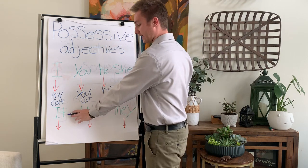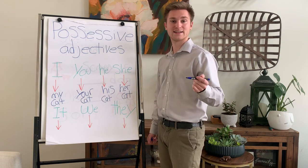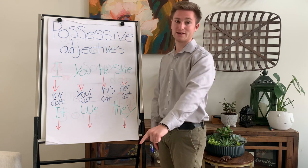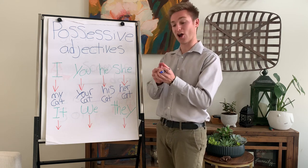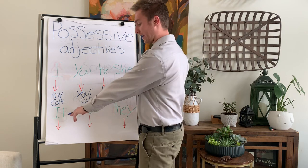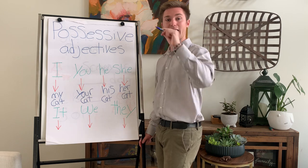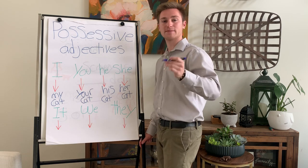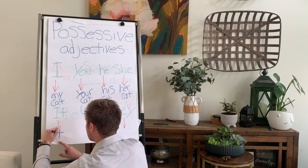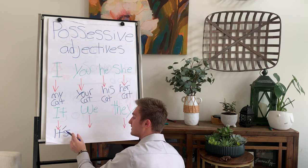If it is an 'it' — for example, the cat — that is its ball. So the cat can own something too. For 'it', we add an apostrophe and an S, and it becomes 'its'. That is its ball.